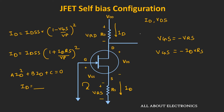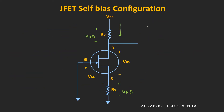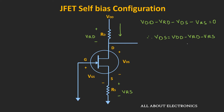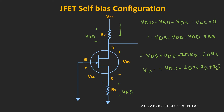Applying KVL in the outer loop: VDD − VRD − VDS − VRS = 0, which gives VDS = VDD − VRD − VRS. Since VRD = ID·RD and VRS = ID·RS, we get VDS = VDD − ID·RD − ID·RS, or equivalently VDS = VDD − ID·(RD + RS).